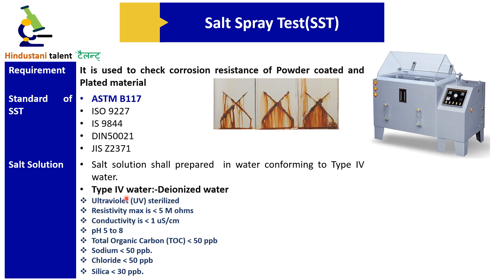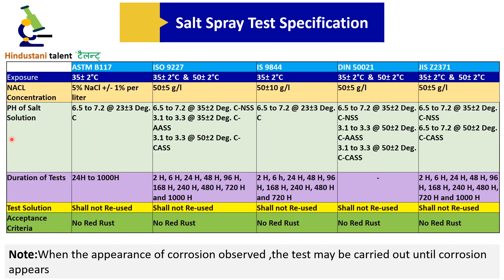Chloride is less than 50 ppb and silica is less than 30 ppb. If these chemical properties are met, then the water is known as Type 4 water. Looking at the complete comparison table, the various testing standards have exposure temperature, sodium chloride concentrations, pH of the salt solutions, and duration of test that are almost the same across standards.